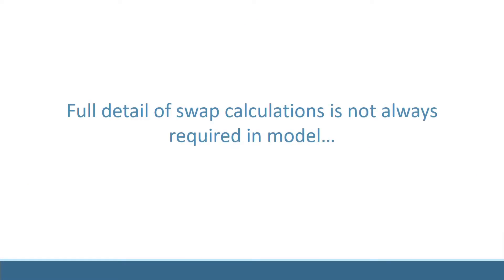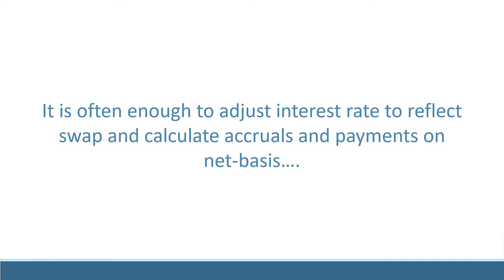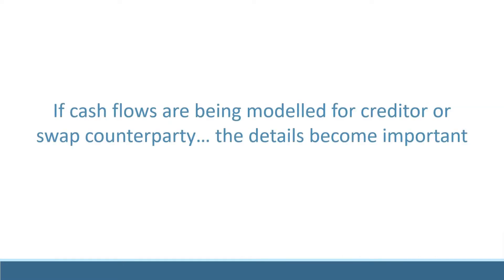Often, it won't be necessary for the financial model to accurately show all of these details. The net cash flows resulting from the swap contract can be calculated by modifying the all-in rate applied to the senior debt. If you are modeling to support the creditor side of the deal, however, these detailed cash flow calculations may be required. So let's look at how to model them now.